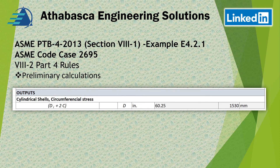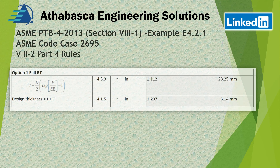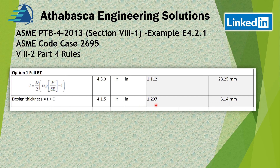Let's set up the method 2 equations for cylindrical shells — the circumferential stress. The inside radius is 60 inches. Using equation 4.3.3 from Division 2, Part 4 (designed by rules), with Division 1 joint efficiency E = 1.0 for full RT and the Division 1 allowable stress, we calculate a thickness of 1.237 inches or 31.4 mm including the corrosion allowance.